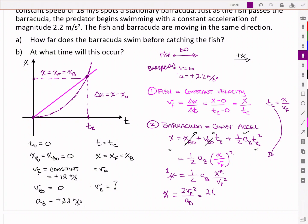And then I can put in values. We've got a fish's velocity of 18 meters per second. That all gets squared. And we've got an acceleration of 2.2 meters per second squared.